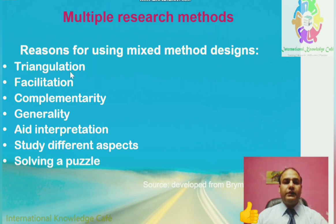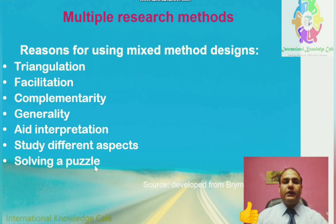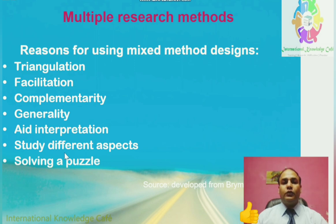The reasons for using Multiple or Mixed Methods include: Triangulation — getting information from different angles; Facilitation; Complementarity; Generality; Interpretation; and studying different aspects of the problem. Using these approaches, the generalizability of the research is better, you can see the problem from different angles, study different aspects, and the reliability of the research is improved because many different angles are covered.